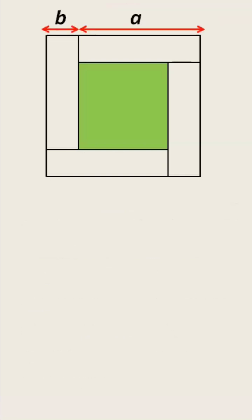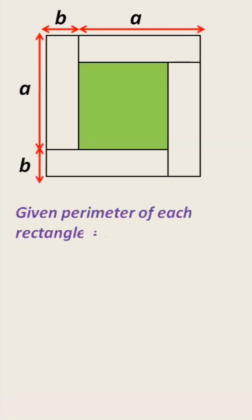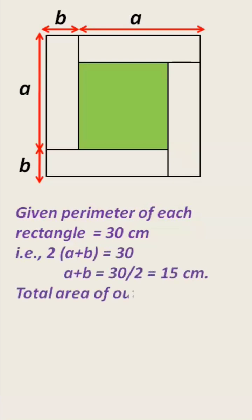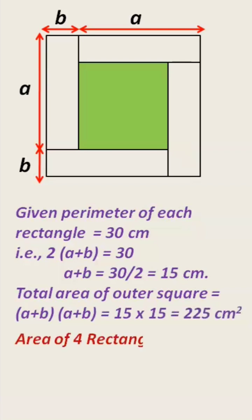Let us take the length of the rectangle as A and breadth as B. Given the perimeter of each rectangle is 30 cm, so 2(A + B) = 30, which means A plus B equals 30 by 2, which is 15 cm. Therefore, the total area of the outer square will be 15 into 15, which is 225 cm².